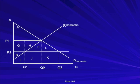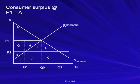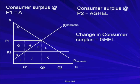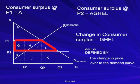Another example: the consumer surplus at price P1 is area A — that triangular area. The consumer surplus at P2 is another triangle, given by A, G, H, E, L. The change in consumer surplus is G, H, E, L — once again the area defined by the change in price, P1 to P2, over to the demand curve. Once again, a trapezoid. Once you get the gist of this, it's quite easy to identify the change in consumer surplus even in very complicated graphs, so it's really worth your while to spend some time on this.